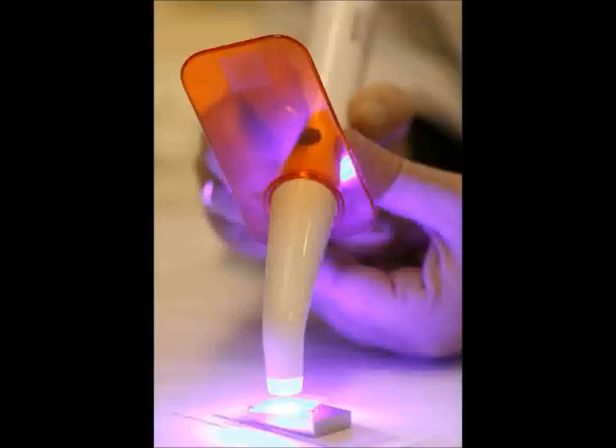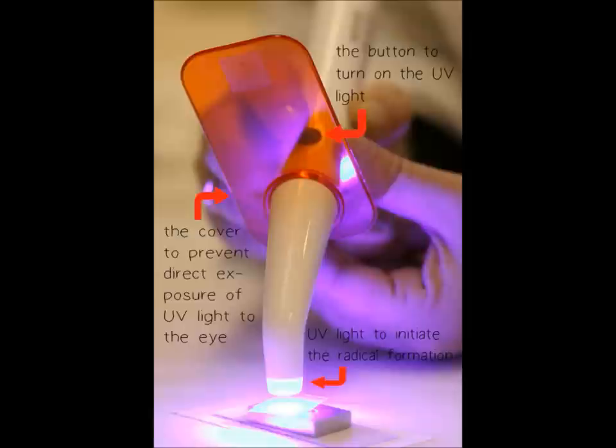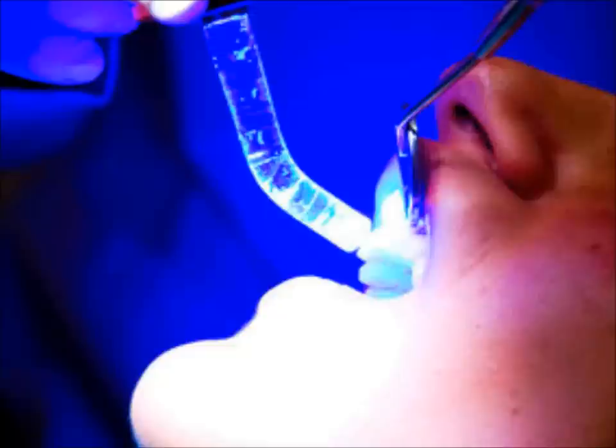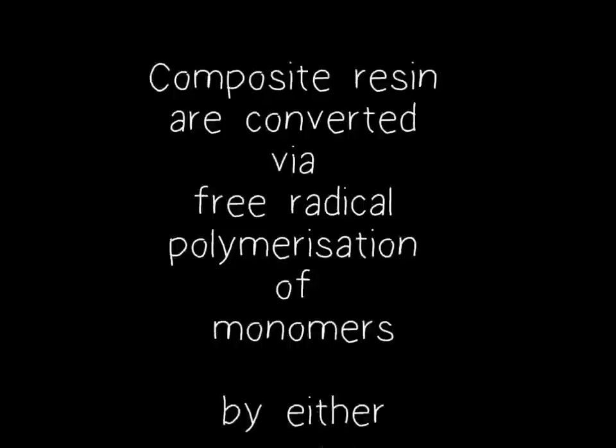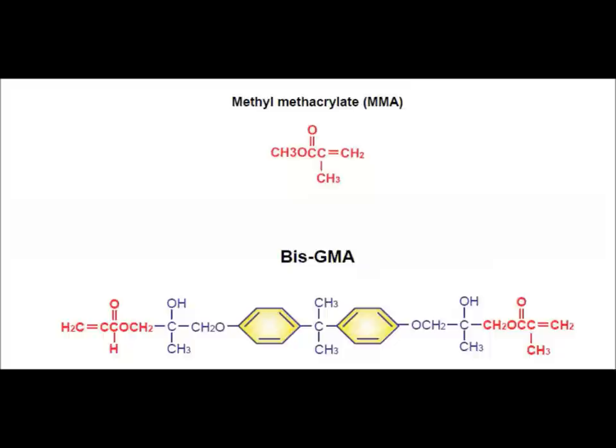Maybe you have noticed that dentists use a dental curing light while performing white fillings with composite resin on patients. Right at that moment when composite resin is cured, polymerization happens inside the mouth. Dental composite resin is converted via free radical polymerization of monomers by either thermal, chemical, or photochemical means.